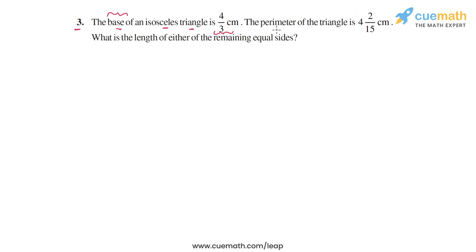Now the problem statement says the perimeter of the triangle is 4 and 2 by 15 centimeters. What is the length of either of the remaining equal sides? So let's draw a figure for the given information because that will make it very simple to understand what we have to do.